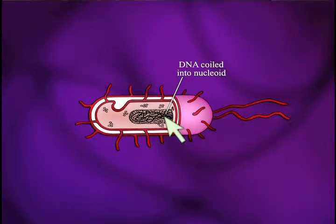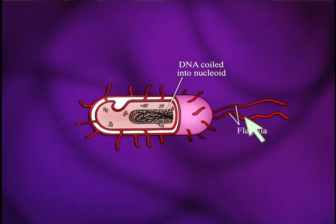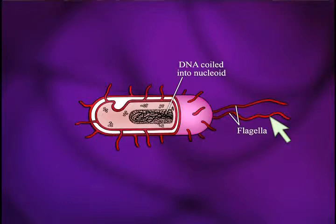This is a representation of a very complex bacterium. Most are not like this. If you look back here, there is what's called a flagella. These flagella are tails that can whip back and forth and move the bacterium along, but most bacteria don't have them.